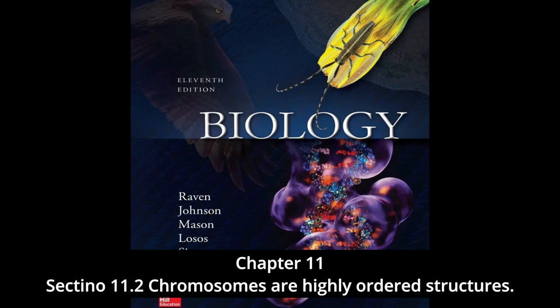The two copies of each chromosome in body cells are called homologous chromosomes, or homologs. Before cell division, each homolog replicates, producing two identical sister chromatids joined at the centromere. Hence, as cell division begins, a human body cell contains 46 replicated chromosomes, each composed of two sister chromatids joined by one centromere — 46 centromeres and 92 chromatids in total. The cell is said to contain 46 chromosomes rather than 92 because, by convention, the number of chromosomes is obtained by counting centromeres.